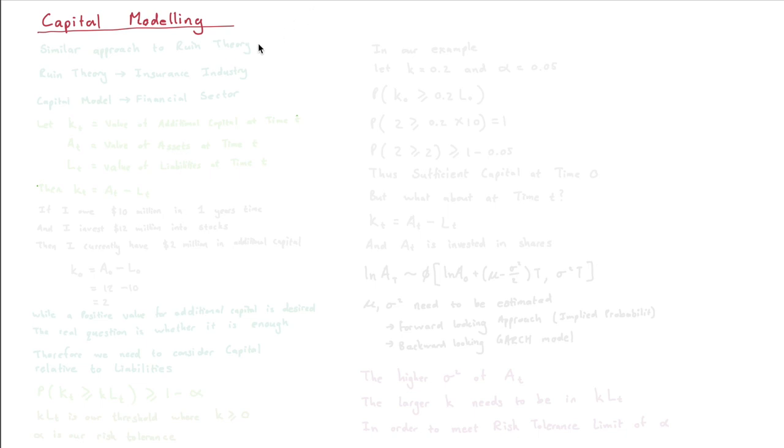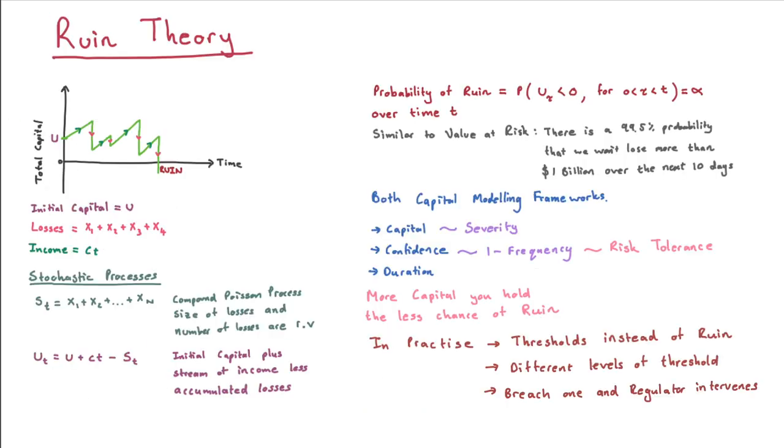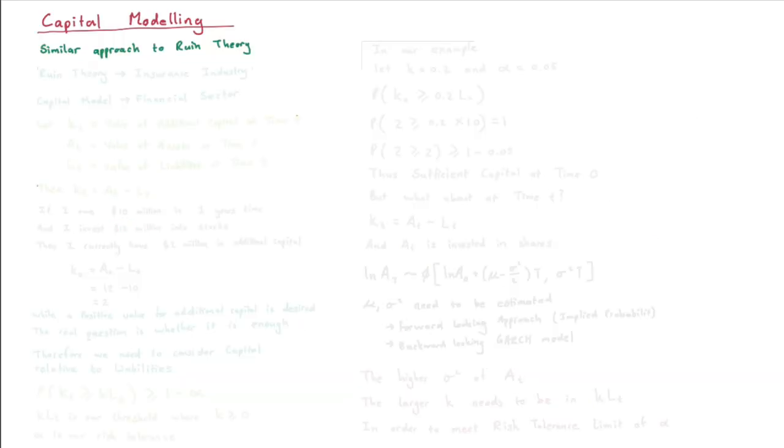We're going to take a similar approach to that of ruin theory. In the previous video, we spoke about ruin theory along with value at risk, which can be used as a capital modeling framework—something that talks about capital, confidence, and duration. Those are the three things we want in a model so that we can use it to see how much capital we need.